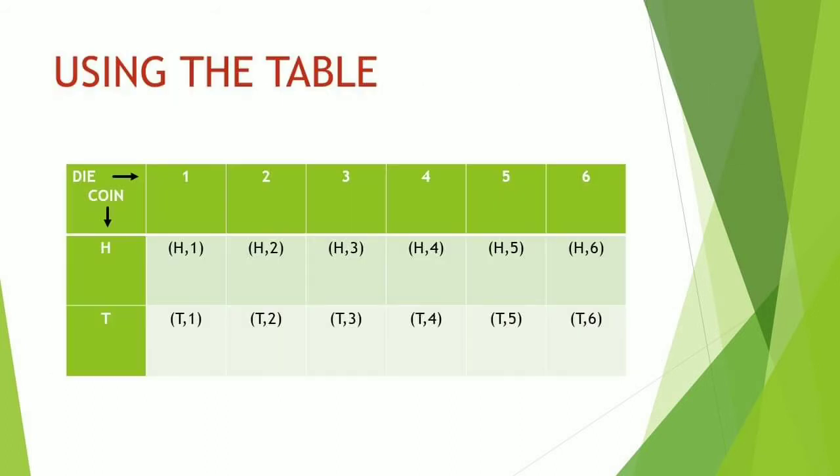In that experiment, we're going to use the table. So the first column shows the head and tail of the coin, and the first row shows the faces of the die: 1, 2, 3, 4, 5, 6. As you can see, we create combinations of the coin and die.